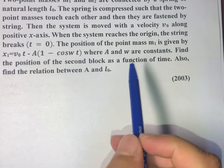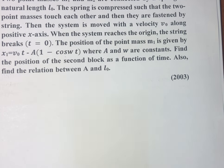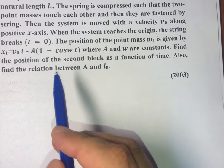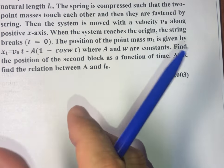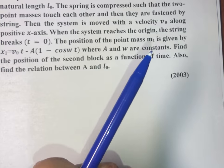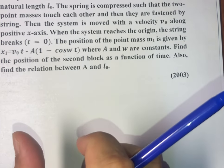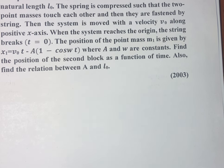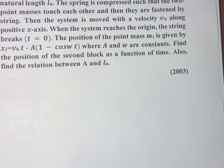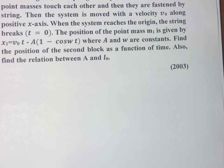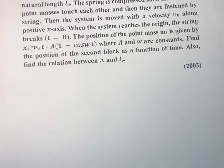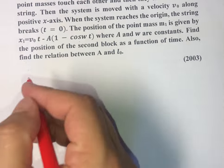There are two point masses m1 and m2 connected by a spring of natural length l0. The spring is compressed and they are fastened by a string. Since there is no external force acting on the system, we can use conservation of momentum.